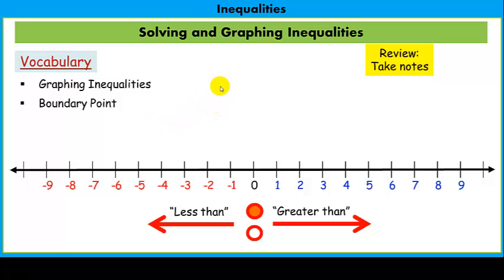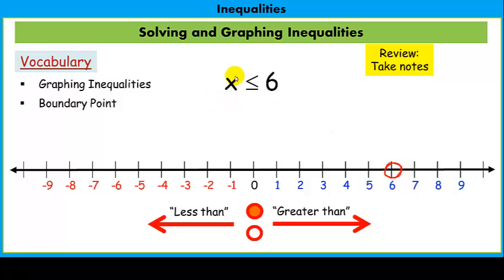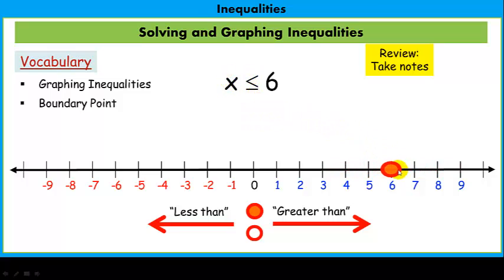Let's make sure we understand a basic algebraic inequality with a variable. If we have x is less than or equal to 6, is the number 6 itself a solution? Is 6 less than or equal to 6? Yes, that's true, so we fill in the boundary point. And since it says all x's less than or equal to 6, all these numbers to the left are also true.